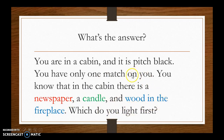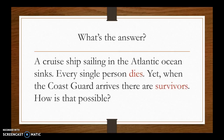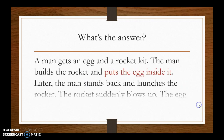Let's do another one. A cruise ship sailing in the Atlantic Ocean sinks. Every single person dies, yet when the Coast Guard arrives there are survivors. How is that possible? The answer is a play on words: the survivors are the people who were married, because only the single people died — 'every single person dies.' The married ones lived. Critical thinking!